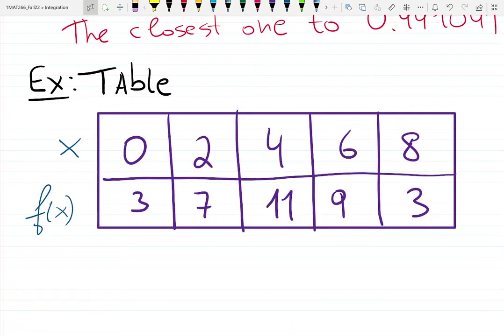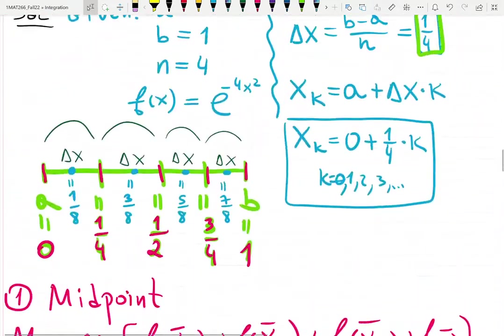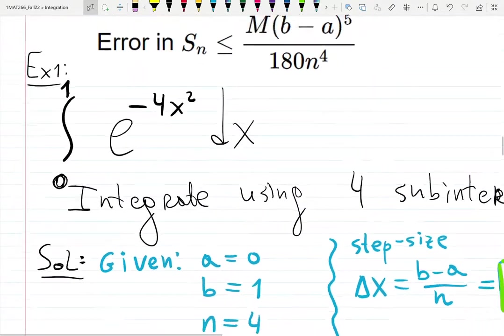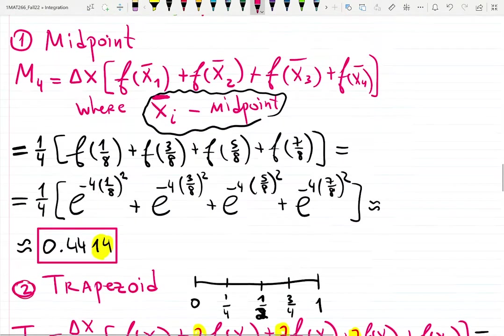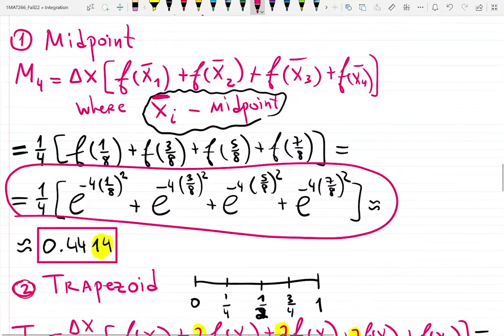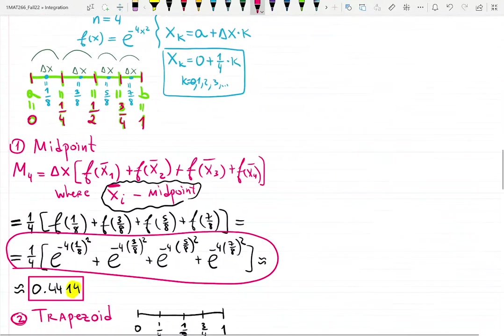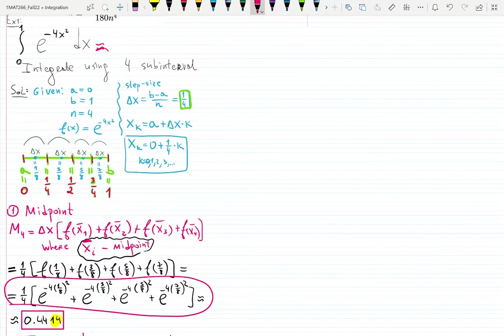In previous examples, we integrated expressions like e^(-4x²) using numerical integration. The answer was approximate, around 0.441419. We learned how to rewrite integrals in terms of data points and functions.